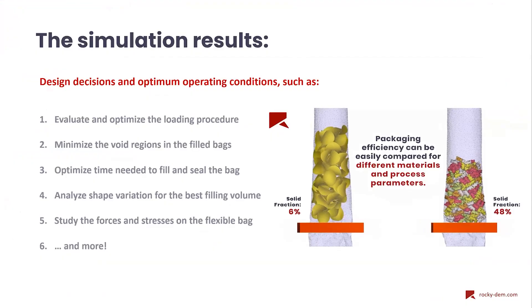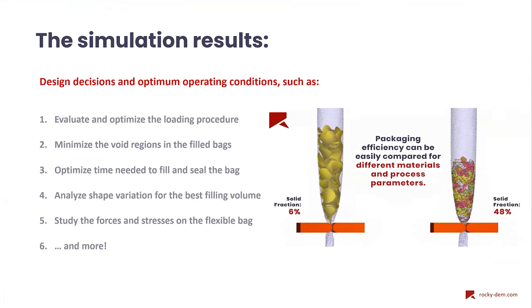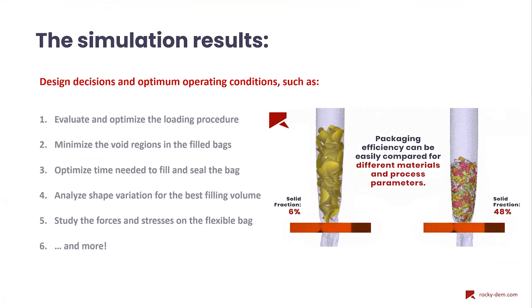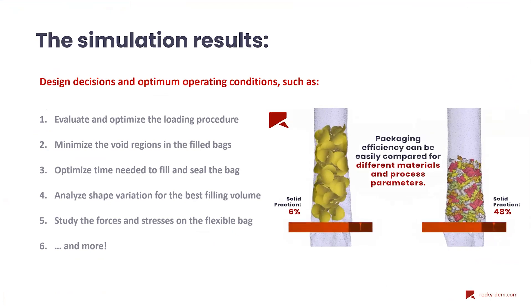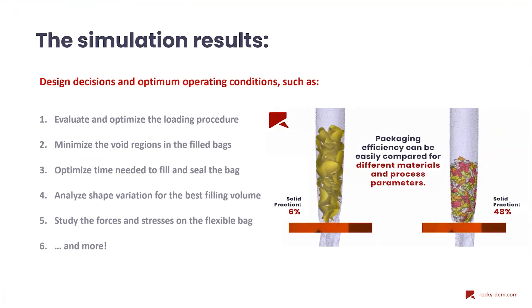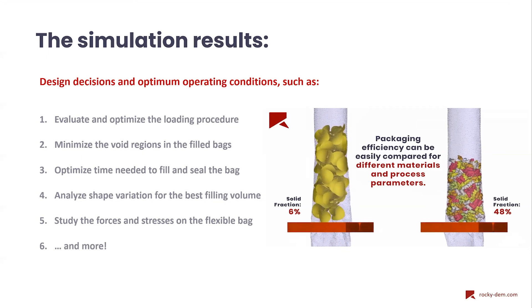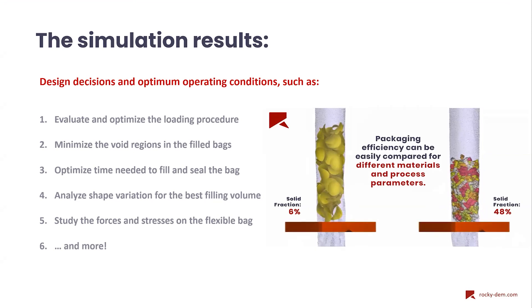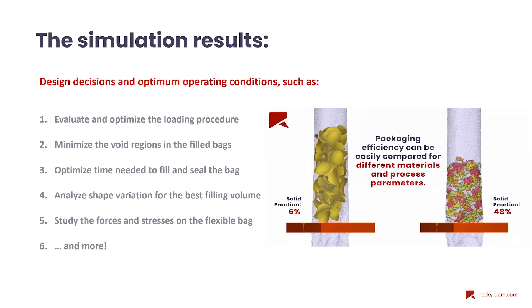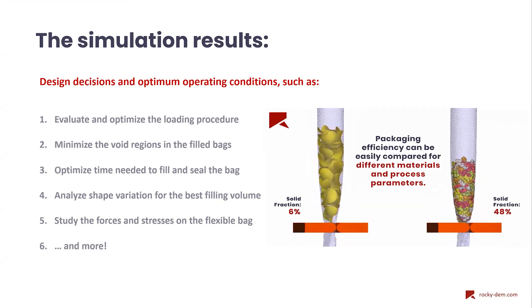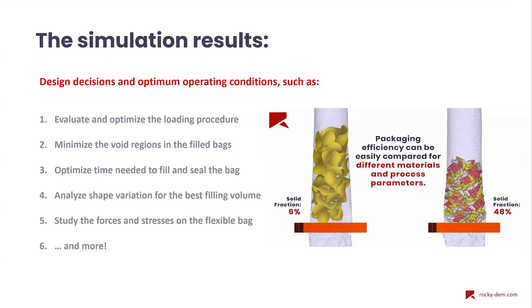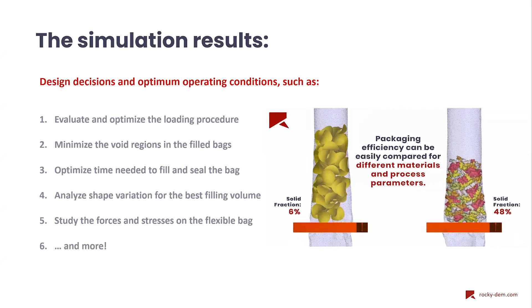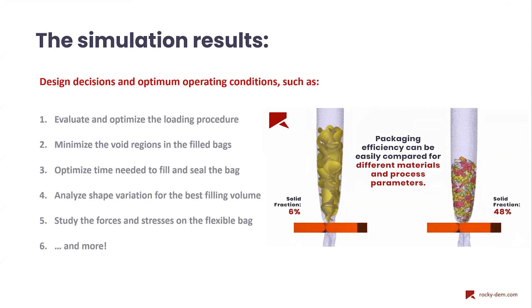Through these results we can drive design decisions and optimize operating conditions for the packaging process. We demonstrated an almond food shape, but this can be applied to different particle shapes for different industries — such as potato chips or gummy bears — by importing custom shapes, each representing different solid fractions in the system. Engineers can analyze void regions, analyze sealing time, analyze packing efficiency, and together use this information to minimize downtime and maintenance for the process.